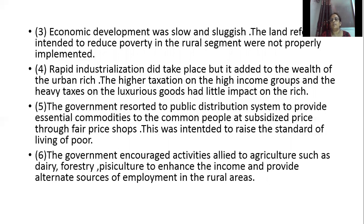The fifth strategy was the Public Distribution System, through which the government provided essential commodities such as food grains, kerosene, and pulses to common people at subsidized prices through fair price shops or ration shops. This was intended to raise the living standard of poor people.